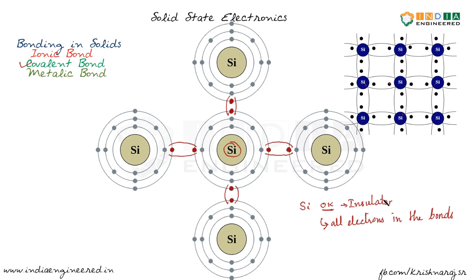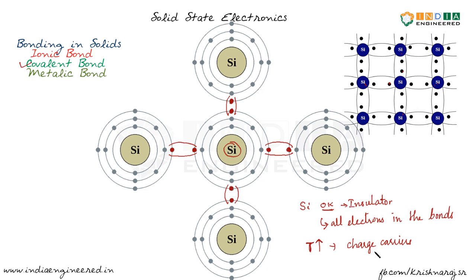As temperature increases, these electrons may gain sufficient energy. Since covalent bonds are not as strong as ionic bonds, they can break and the electrons come out. Once out of the bonds, they act as charge carriers and contribute to conduction. So increasing temperature generates more charge carriers — electrons gain energy, break the bonds, become free to move throughout the crystal structure, and contribute to current flow.